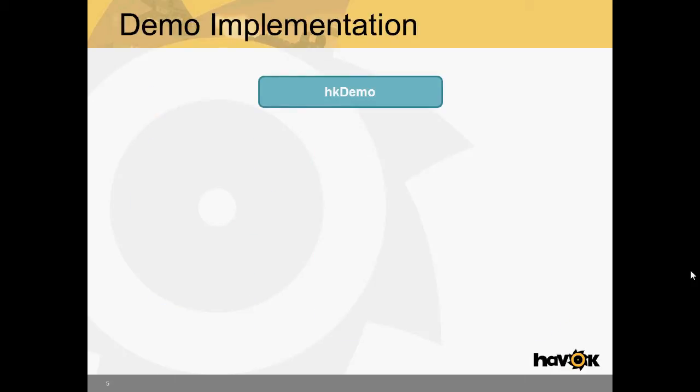So how exactly is this implemented in the demo framework? Well, we have one base class called HKDemo. And this is what all demos inherit off of in the demo framework. And it's an abstract class, so you can't actually use HKDemo. You actually have to inherit off of it and implement certain functions before you can use it. And to get the game execution flow that we saw in the previous slide, HKDefaultDemo is provided for you.